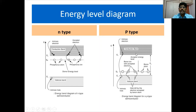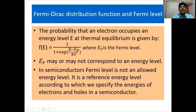Whereas, in the case of P-type, to get a P-type semiconductor, we dope a pure semiconductor with a trivalent impurity. The trivalent impurity will accept electrons from the valence band. That is why we have an additional energy level Ea known as acceptor energy level, and these acceptor energy levels are close to the valence band.